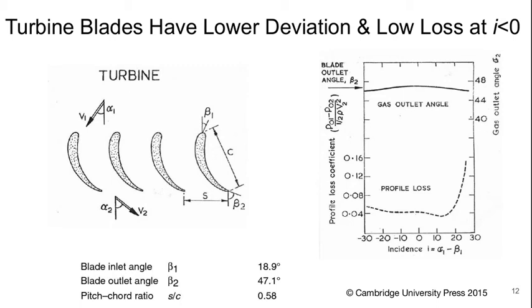As for turbine blades, these have lower deviation and low loss at negative incidence. We can see here that our blade outlet angle and the gas outlet angle are within a couple of degrees of each other over a very wide incidence range. And the loss remains low until we get to very high positive incidence. And again, this is because of the overall favorable pressure gradient helping to prevent flow separation.